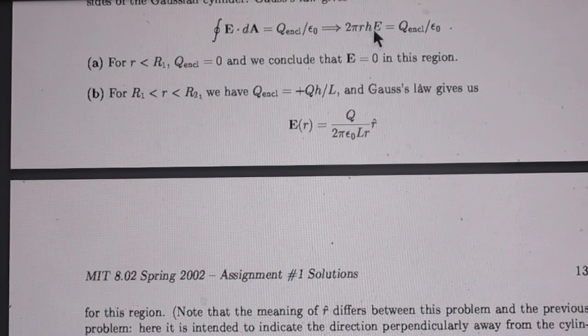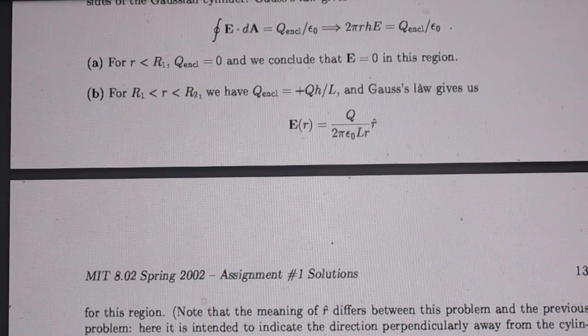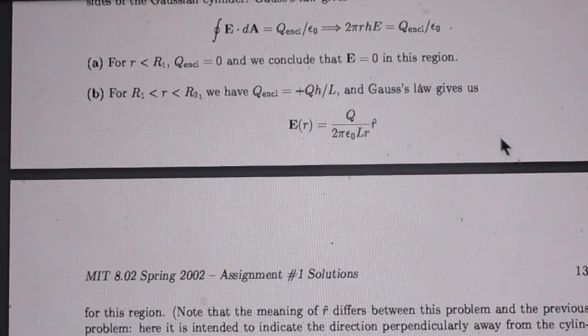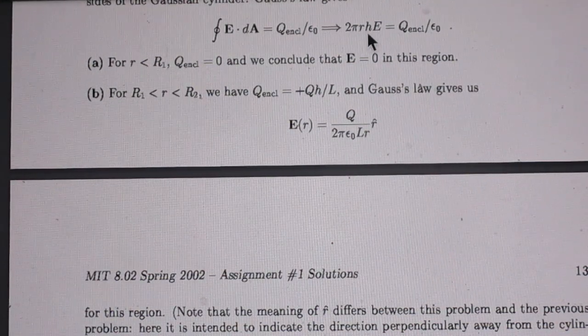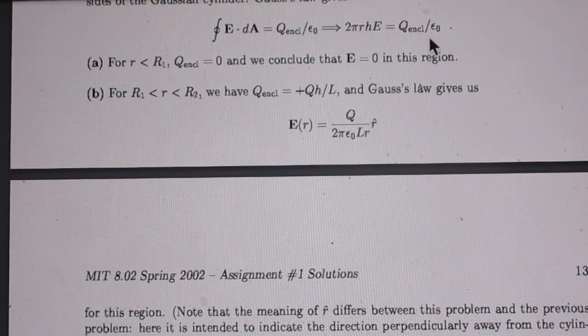And if you take a random radius small r and a random length h, then that surface area is 2πrh.